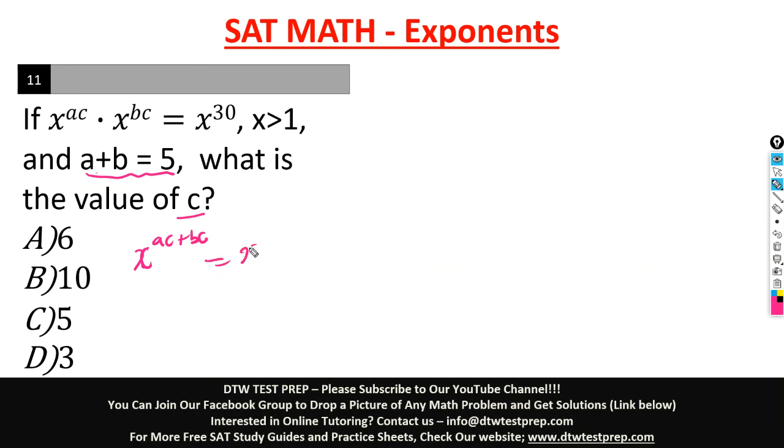Here I would quickly cancel out x. When you have the same basis on different sides of the equation, it cancels out. And you finally have ac plus bc equal to 30. So from here now we're looking for c, and we know that a plus b is 5.